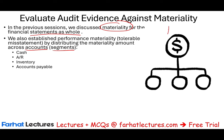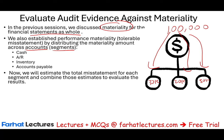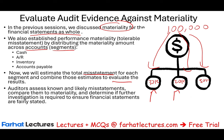Let's assume we established materiality for the whole financial statement at $100,000. Then we allocated this materiality: $30,000 for cash, $20,000 for receivable, and $50,000 for inventory. Now we will estimate the total misstatement for each segment. Auditors assess known and likely misstatements, compare them to materiality, and determine if further investigation is required to ensure the financial statements are fairly stated.